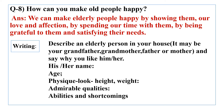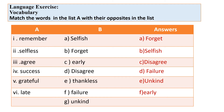Activity: Describe an elderly person in your house — it may be a grandfather, grandmother, mother, or father — and say why you like him or her. You can write their name, age, physical appearance, height, weight, admirable qualities, abilities, and shortcomings. Describe how they look, what qualities you like, and how you admire them. Write a paragraph about this in your classbook.